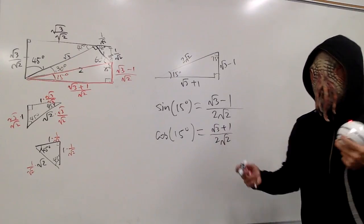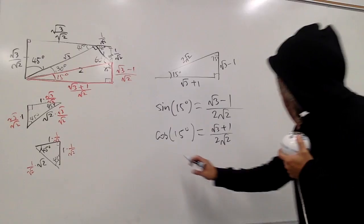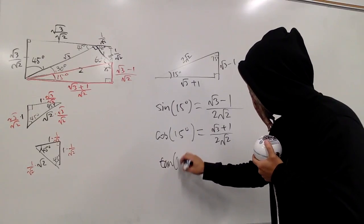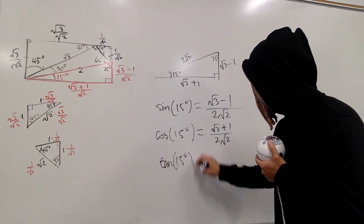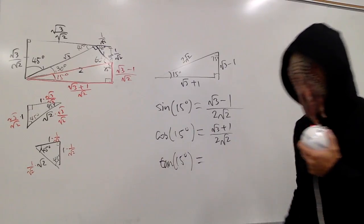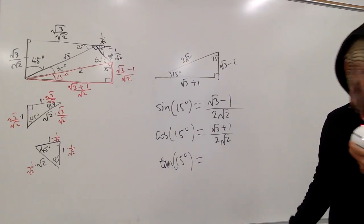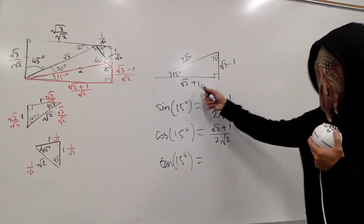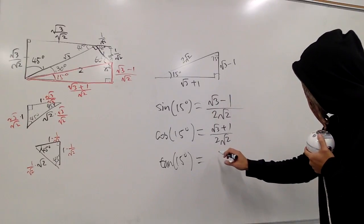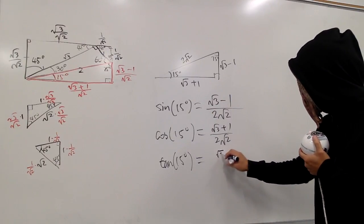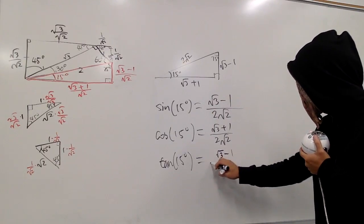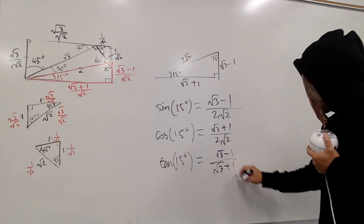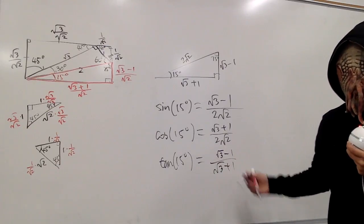Lastly, let's do tangent. Tangent of 15 degrees is this over that: square root of 3 minus 1 over square root of 3 plus 1.